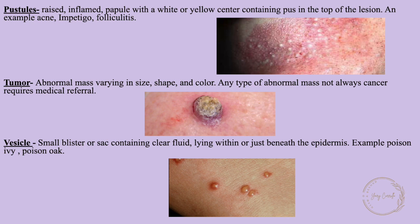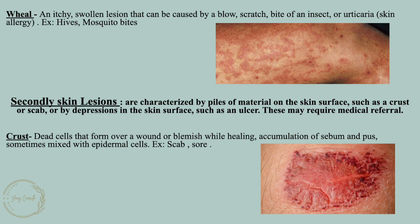A vesicle is a small blister or sac containing clear fluid lying within or just beneath the epidermis; examples include poison ivy and poison oak. A wheal is an itchy, swollen lesion that can be caused by a blow, scratch, insect bite, or urticaria — skin allergies; examples include hives and mosquito bites. Secondary lesions are categorized by piles of material on the skin surface such as crust or scab, or by depression in the skin surface such as an ulcer.